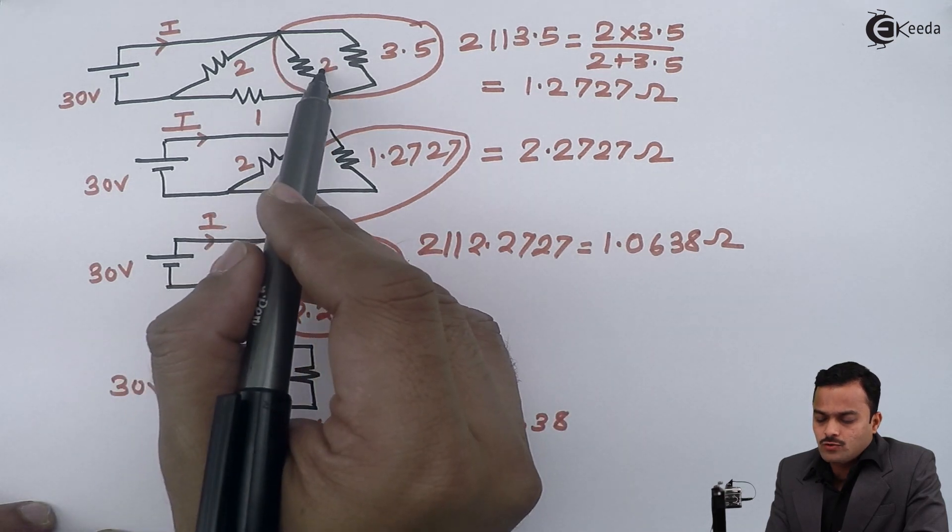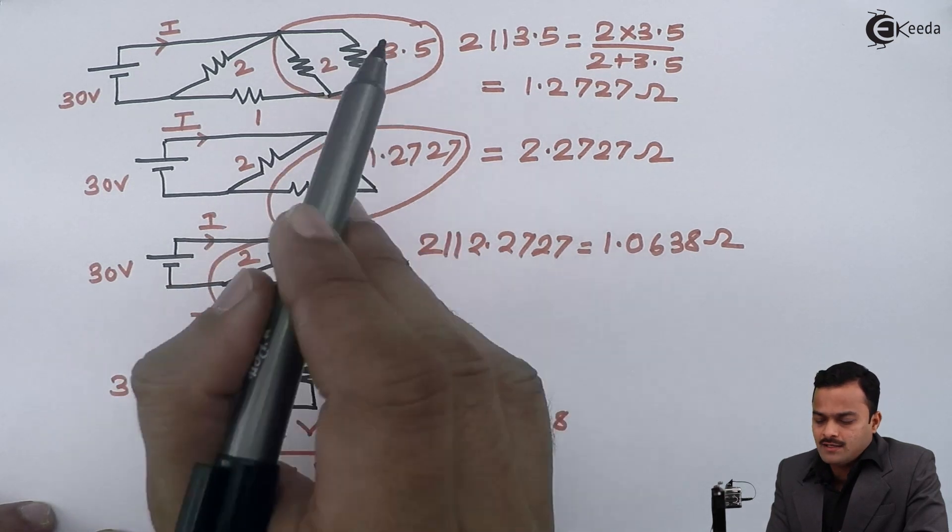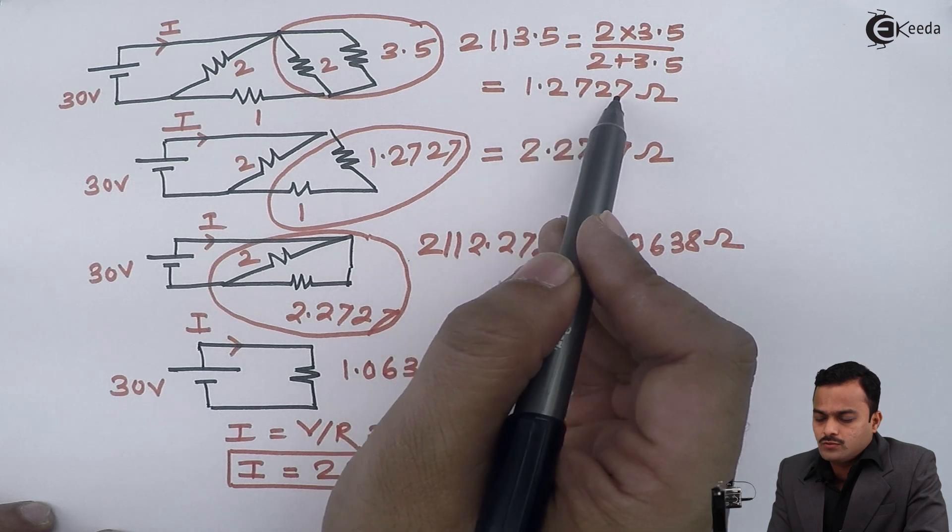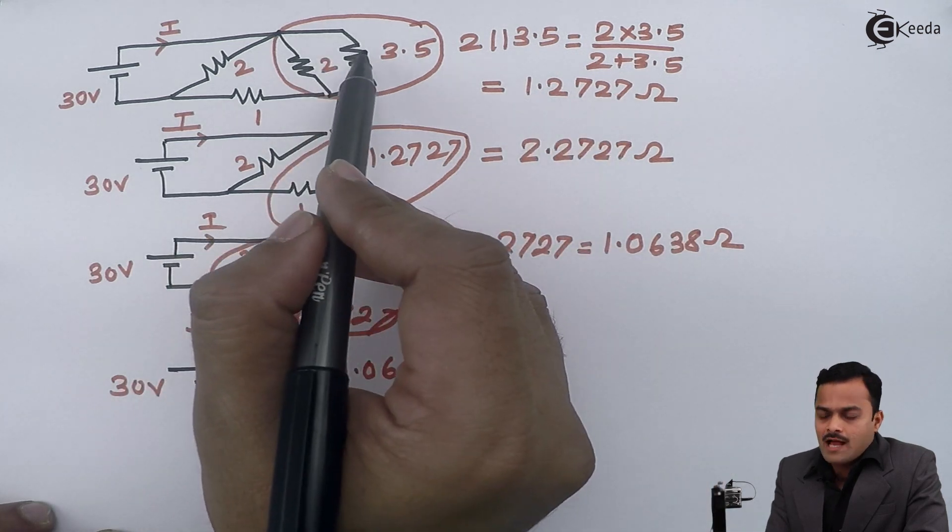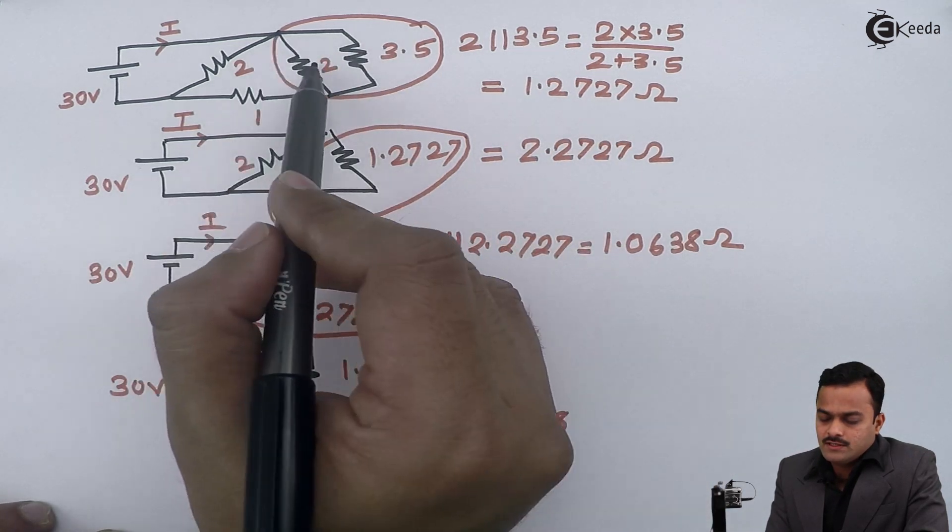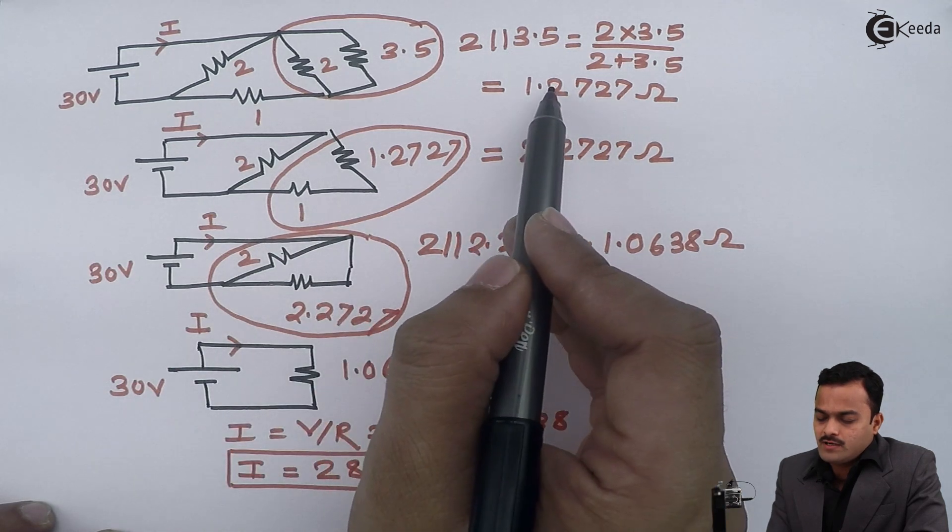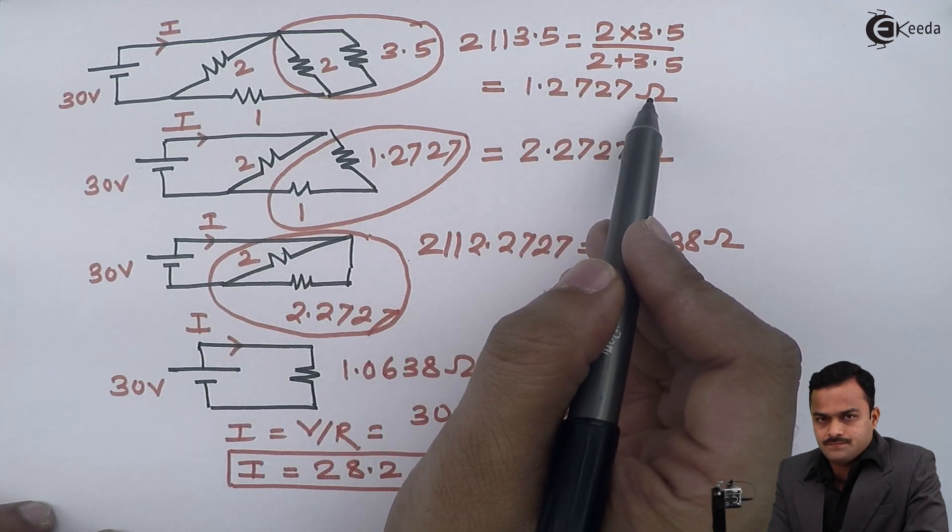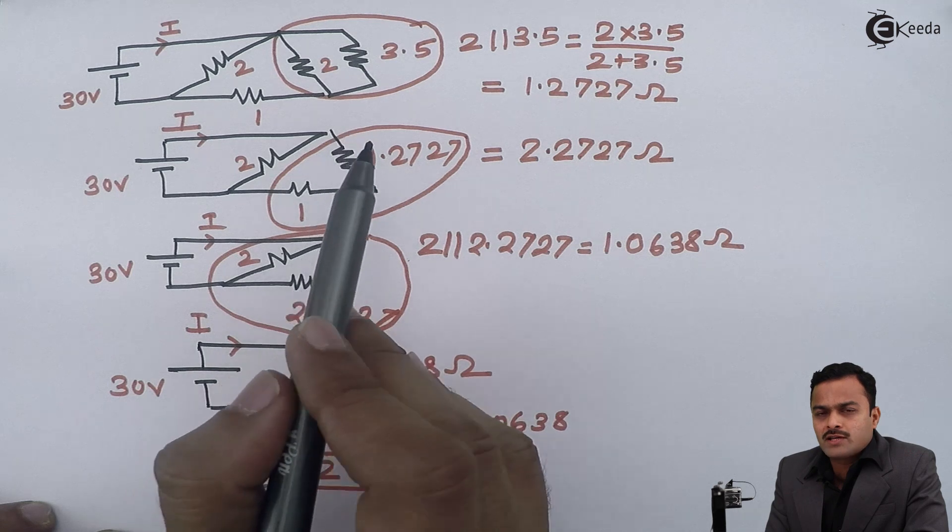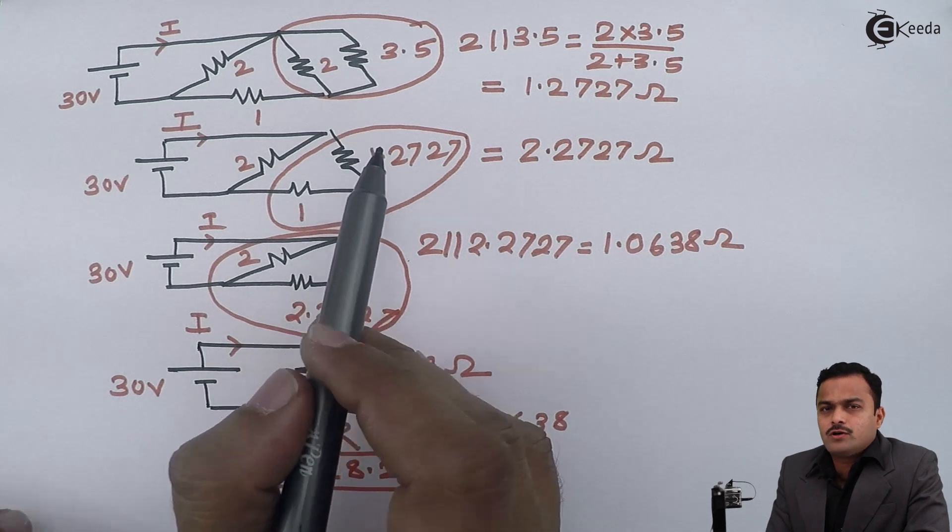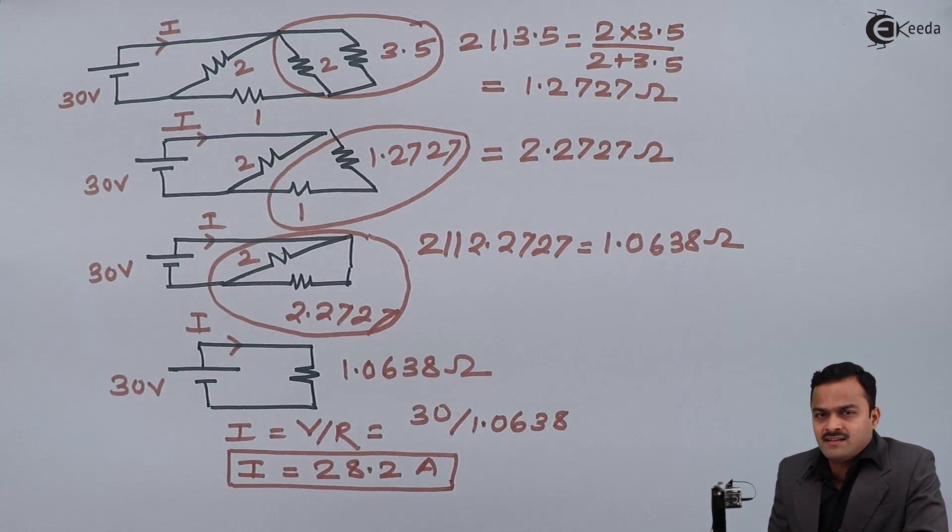See the fact: 2 ohm and 3.5 ohm are in parallel, the equivalent is 1.2727, and what I have done is removed the 3.5 ohm. This resistor is as good as the equivalent resistor 1.2727. So keep this fact in mind all the time whenever you are solving a problem of parallel connections. The rest of the problems we will see in subsequent videos. Thank you.